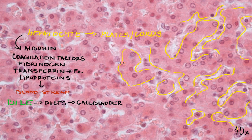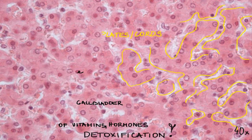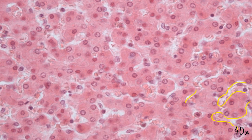Hepatocytes also store glucose, which is found in its polymer form — glycogen. They also take part in the metabolism of vitamins and hormones, and in the detoxification of foreign and harmful substances which could damage the body.